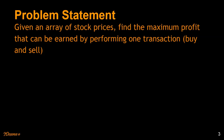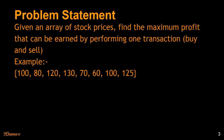The problem statement is: given an array of stock prices, we need to find out the maximum profit that can be earned by performing one transaction, which involves buying and selling once. For example, if you have an array like this — 100 is the price on day one, 80 on day two, 120 on day three, and so on — you need to find the maximum profit by doing one transaction over the given period of time.